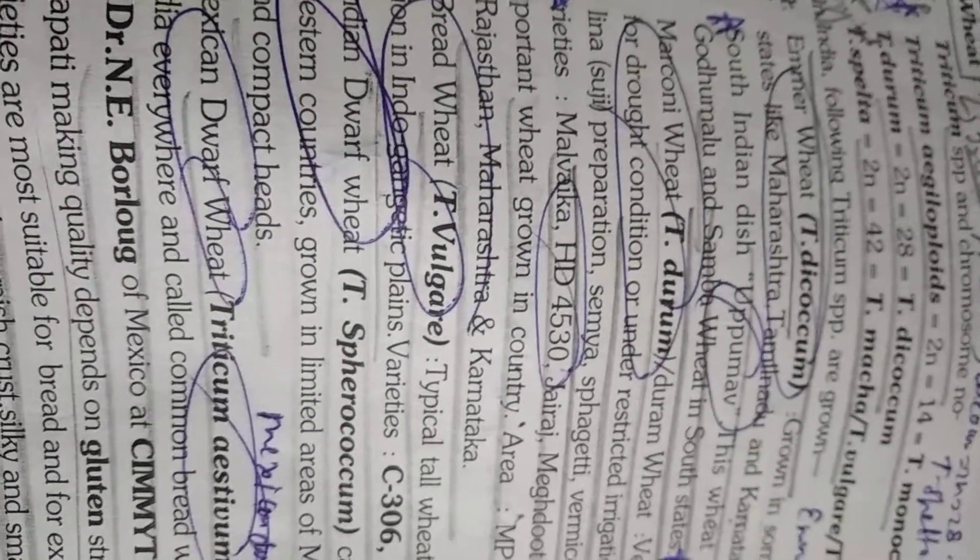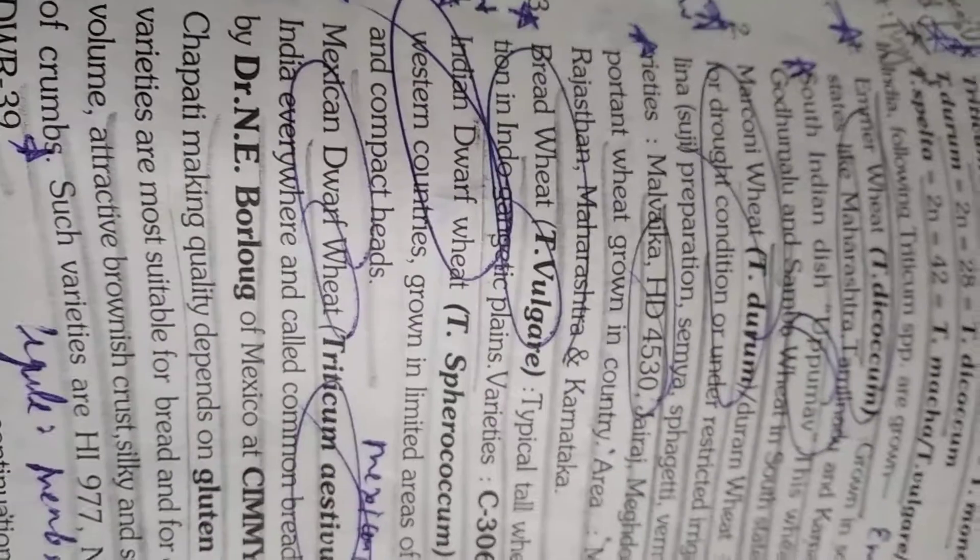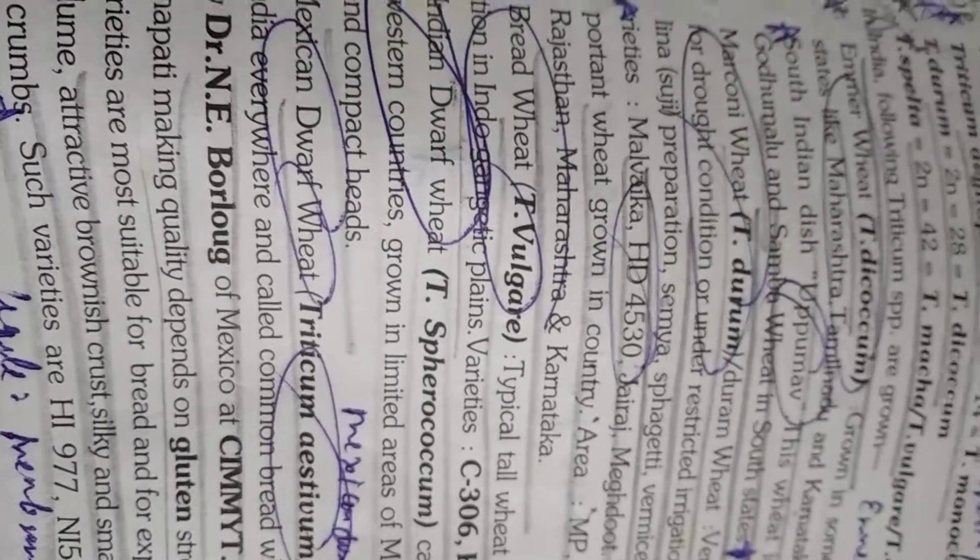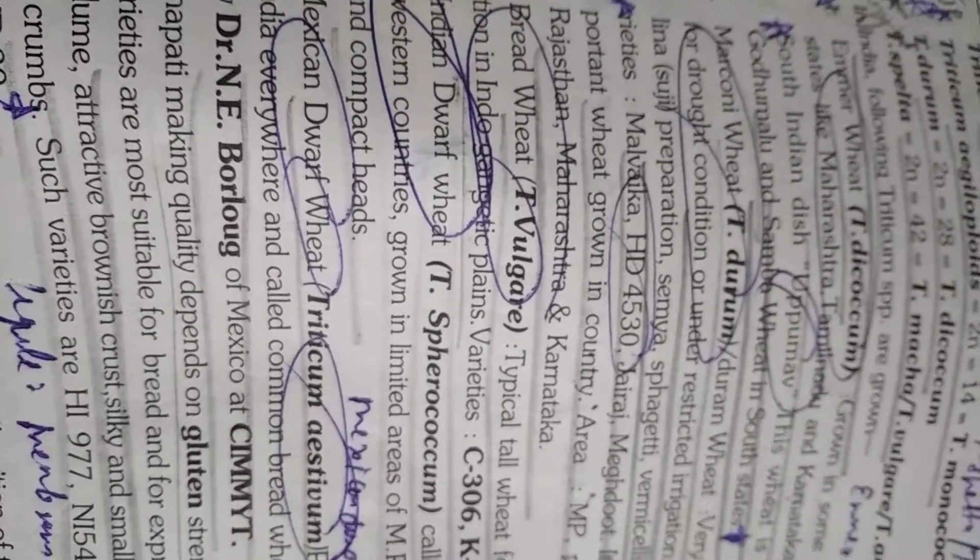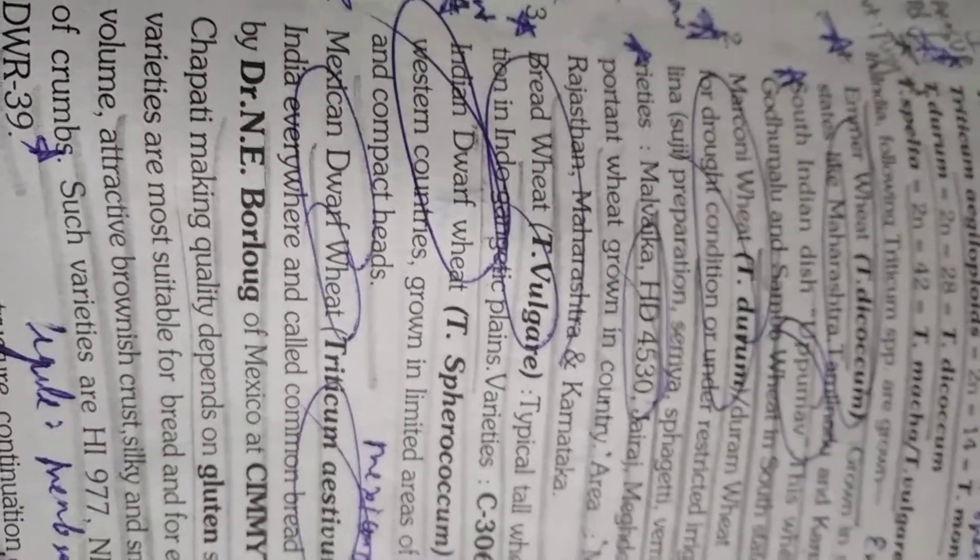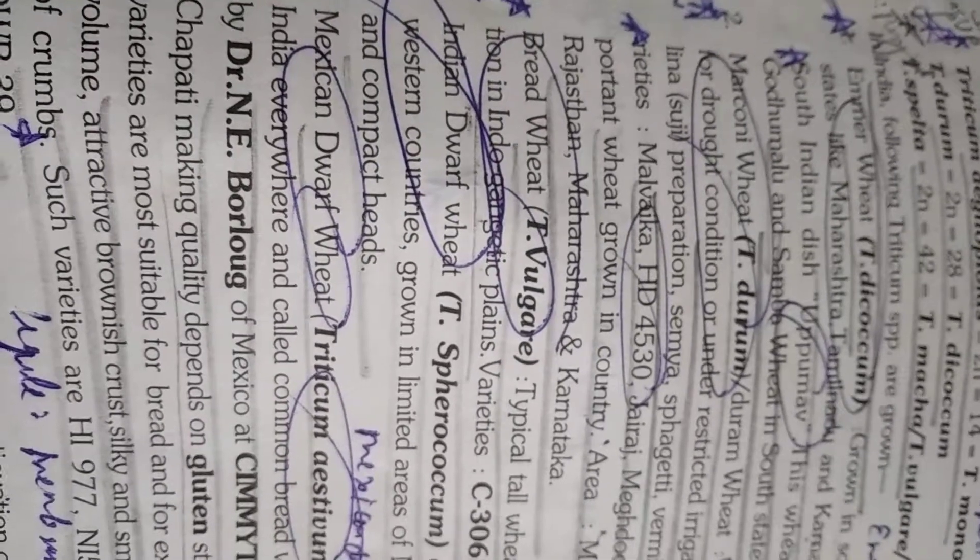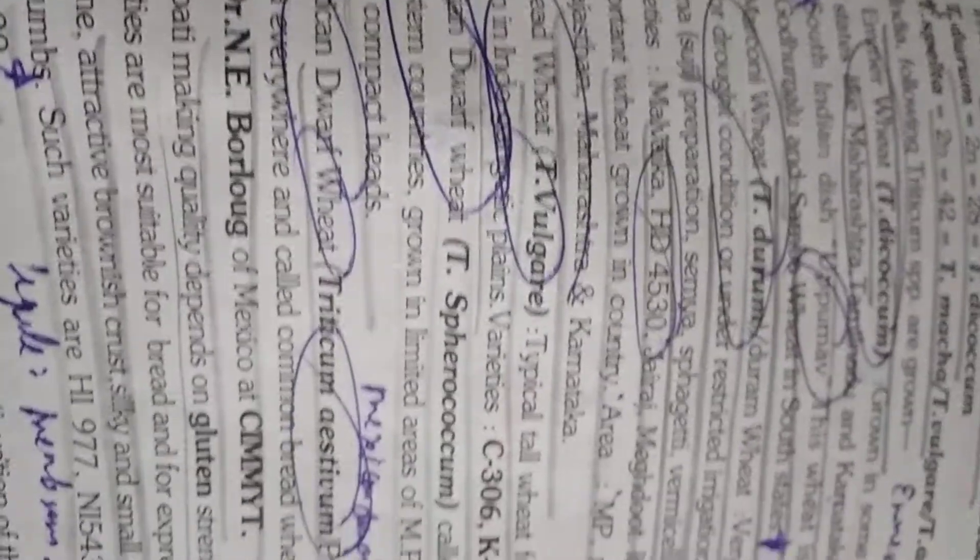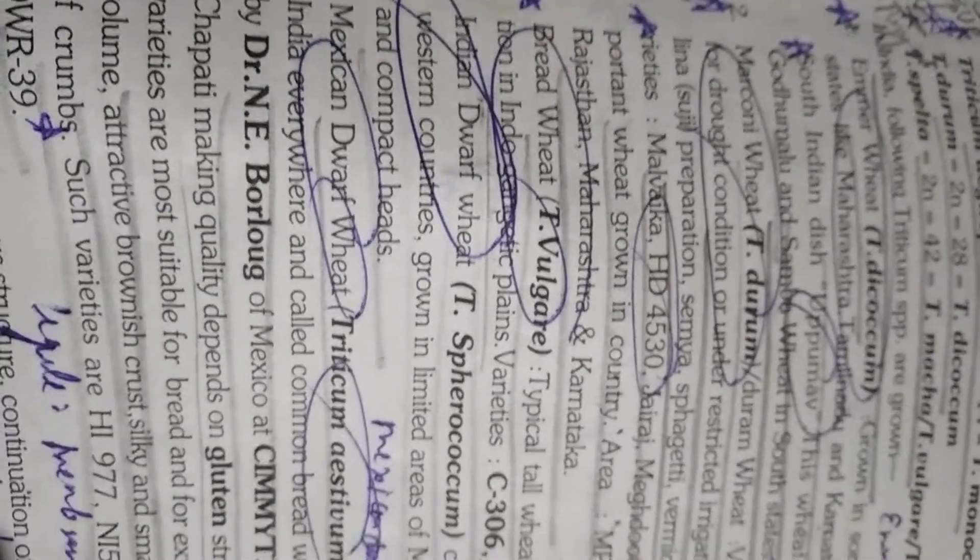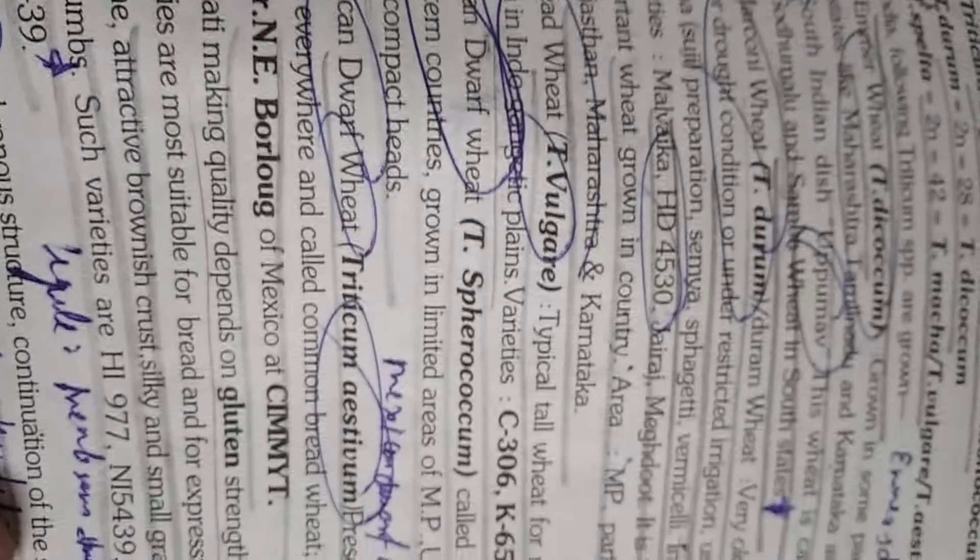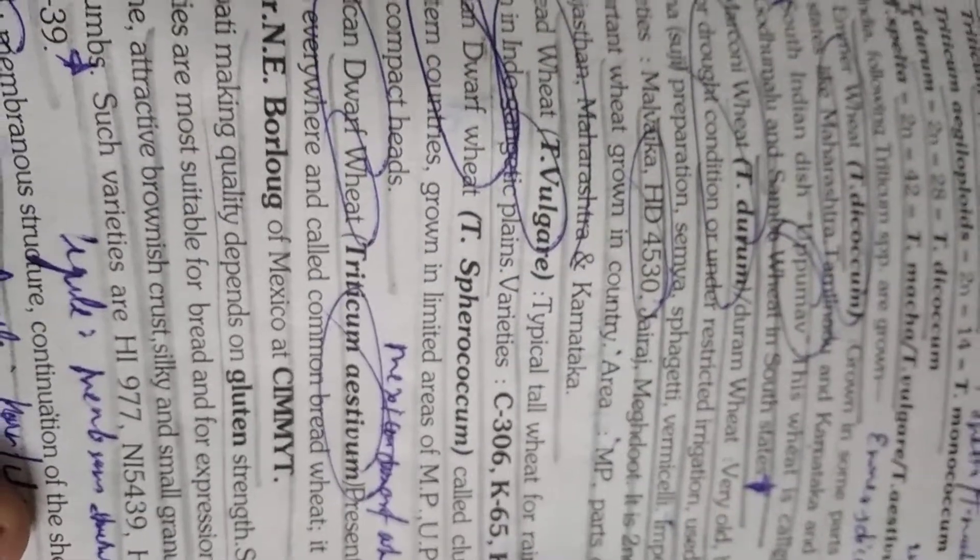Triticum durum or durum wheat is macaroni wheat. Bread wheat is Triticum aestivum. Sometimes it is given Triticum vulgare but most of the time it is Triticum aestivum only. So bread wheat you remember Triticum aestivum and Triticum vulgare both. Indian dwarf wheat is Triticum sphaerococcum and Mexican dwarf wheat is Triticum aestivum. Please students remember these.